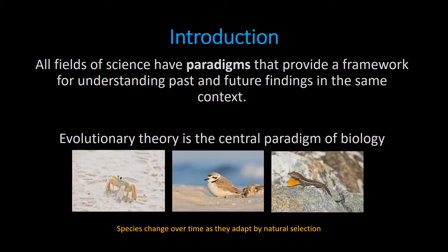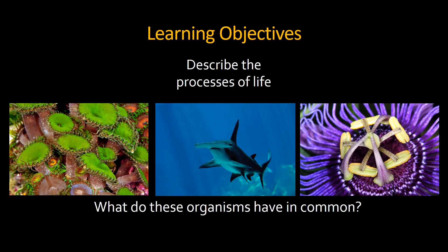It explains why a ghost crab, a snowy plover, and a lizard all share so many characteristics in common, even though to us they may look very, very different. The goal of this lesson is to come up with a process of life — some way of thinking about life that we could apply across the board to every living organism on this planet, from green zoanthids to a hammerhead shark to a passion flower. What do all of these things have in common?